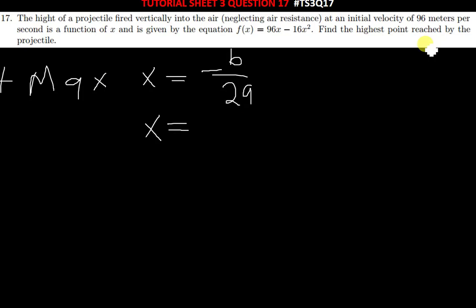While finding the highest point at maximum, we find negative B. What is our B? Our B is 96, and then over 2A. What is our A? Our A is negative 16. So you divide: 96 divided by 32 is going to give us 3.